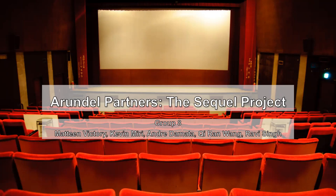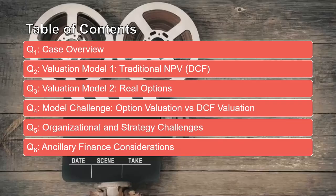We're going to begin with a case overview followed by two valuation models we prepared for today — one being a DCF and the other a real options valuation model. We're then going to have a model challenge comparing and contrasting the pros and cons of each approach, and comment on why we think the options valuation model is the more effective vehicle to describe the essence of the case from an analytical perspective. We'll also talk about organizational and strategy challenges that could arise for R&L implementing their vision, and finally some ancillary finance considerations time permitting.